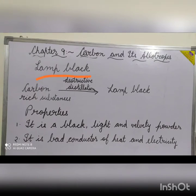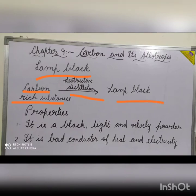Lamp black, also called soot, is obtained when substances rich in carbon — such as turpentine oil, kerosene, vegetable oil, petrol, benzene and paraffin — are burnt in the absence of oxygen, i.e., by destructive distillation. The soot obtained is collected over damp blankets by jerking. In rural areas where kerosene lamps are used for lighting, lamp black is a common sight. The deposit on the inside walls of a chimney is lamp black.